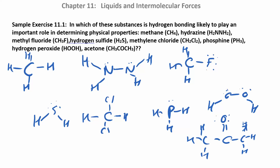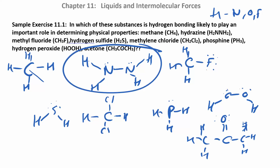Working through the answers: methane does not have a hydrogen attached to N, O, or F, so no hydrogen bonding. Hydrazine does — hydrogen is directly attached to nitrogen, so it can form hydrogen bonds. That hydrogen will interact with the nitrogen on another hydrazine molecule. Methyl fluoride has a fluorine, but there's no hydrogen attached directly to that fluorine, so it does not form hydrogen bonds.